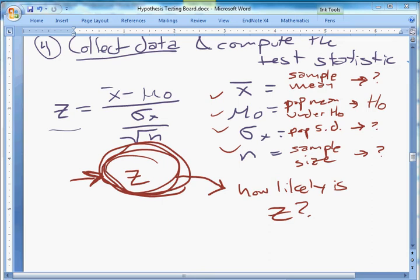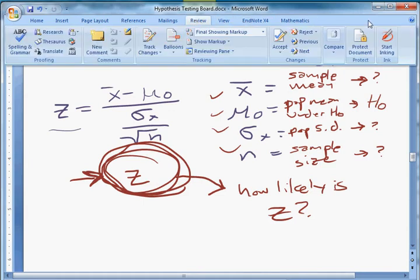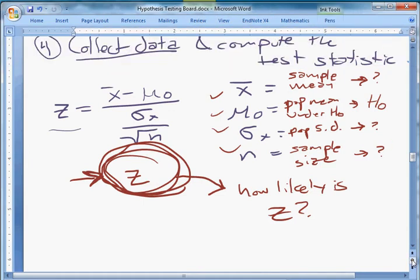Alright, welcome back. What I'm talking about now is hypothesis testing, and we've done steps 1 through 4. Right now we're talking about hypothesis tests of one population mean, assuming we know the population standard deviation. We'll complicate this. We'll do lots more stuff over the course of this semester. This is where we're going to start.